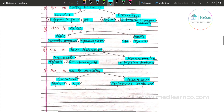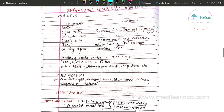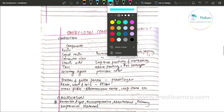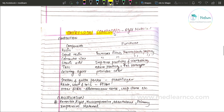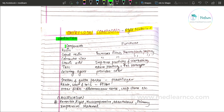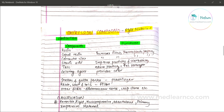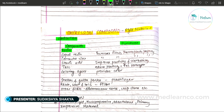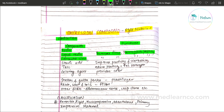Now, let us discuss impression compound in detail. Impression compound is a rigid impression material. Regarding its composition: resin increases flow and thermoplastic property. Carnauba wax also increases flow and thermoplastic property.